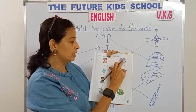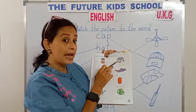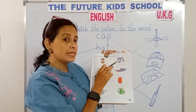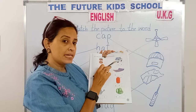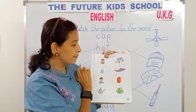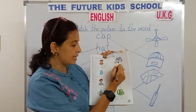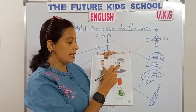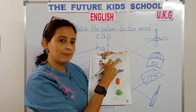Look at this picture — this is a cap. C-A-P spells cap. You've got only A-P, so the missing letter is C. C-A-P spells cap.